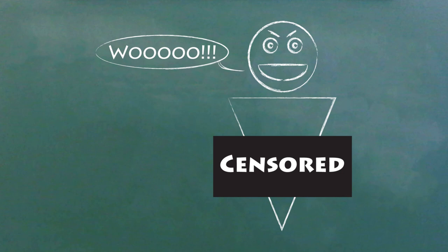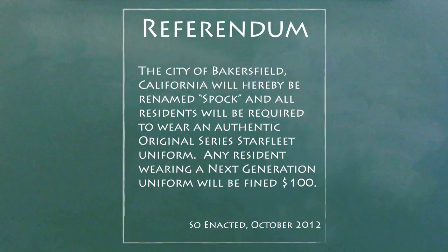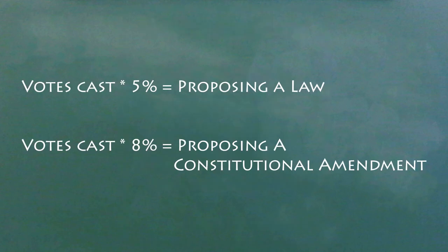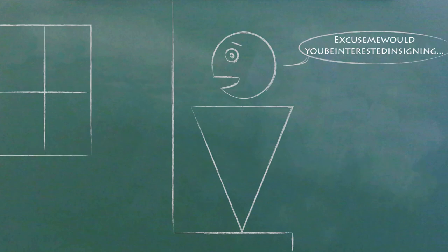In California, for example, you need to draft up what you want to do, although sometimes the government will help you draft it if you request. Then you have to gather signatures to get it on the ballot. In California, you need at least 5% of the number of votes cast in the last election for governor to put a proposed law on the ballot, and you need at least 8% to put a state constitutional amendment on the ballot. And you need to get those signatures in less than five months. Then your proposal can be voted on in the next election.